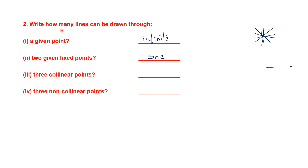Next question: how many lines can be drawn through three collinear points? Remember, collinear points are three points that lie on the same straight line. You can draw only one line through three collinear points. Next question: how many lines can be drawn through three non-collinear points? Non-collinear points lie randomly, not on a straight line. Through all three non-collinear points you cannot draw one straight line. So the answer is none.